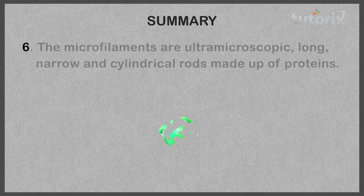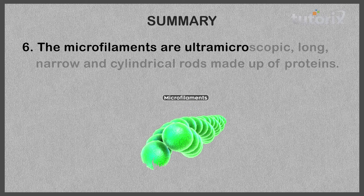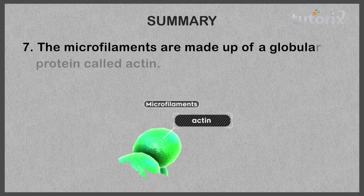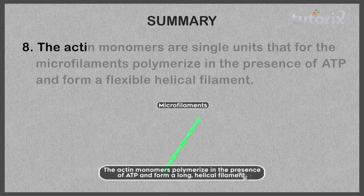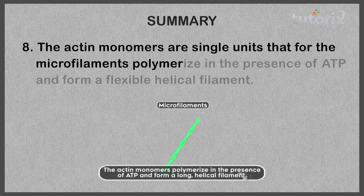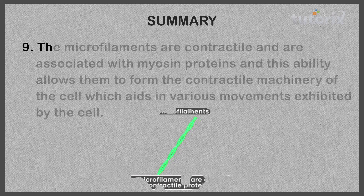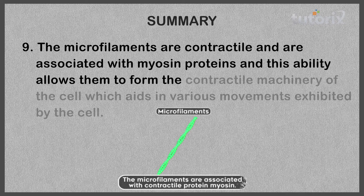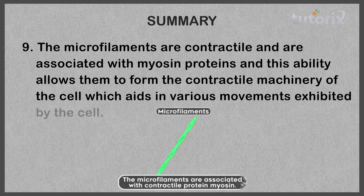Microfilaments are contractile and associated with the protein myosin for contraction. They are ultra-microscopic, long, narrow, and cylindrical rods made up of proteins — specifically a globular protein called actin. Actin monomers polymerize in the presence of ATP to form a flexible helical filament. This association with myosin allows microfilaments to form the contractile machinery of the cell, aiding in various movements exhibited by the cell.